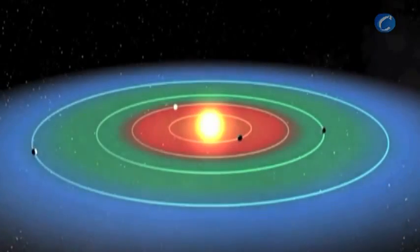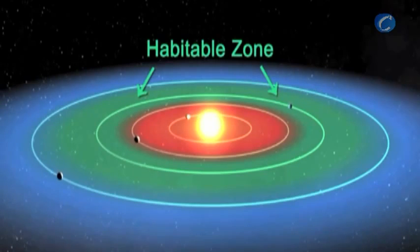So the habitable zone is sort of a temperature range that a planet would have if it's at the right distance from a star so that you could have water on its surface.